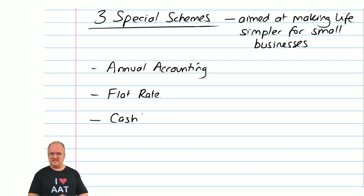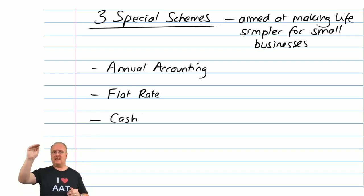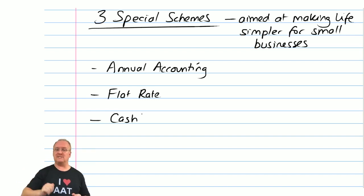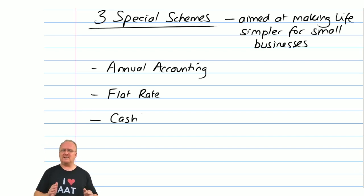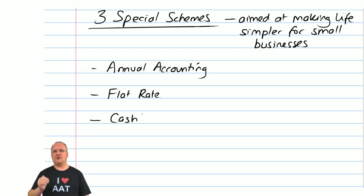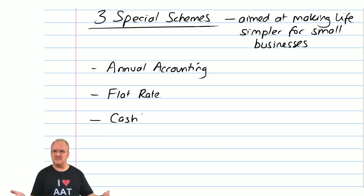The flat rate scheme works like this. Typically with VAT you calculate the output tax you've charged to customers and then subtract the input tax you've been charged by your suppliers. The flat rate scheme gets rid of all of that — instead, you will be charged a percentage of your sales revenue with no need to do the output tax and input tax separately. Nice and simple.